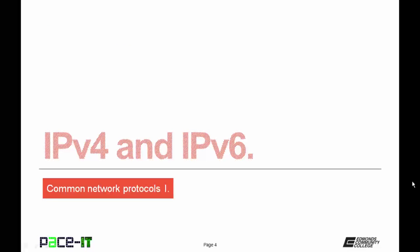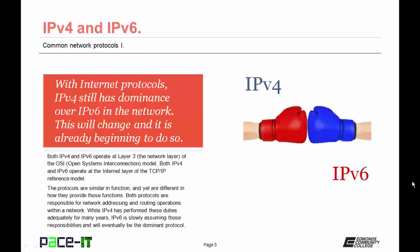I'm going to begin by talking about IPv4 and IPv6. With internet protocols, IPv4 still has dominance over IPv6 in the network — this will change, and it is already beginning to do so. Both IPv4 and IPv6 operate at layer 3, the network layer, of the OSI model, and at the internet layer of the TCP/IP reference model. The protocols are similar in function, yet different in how they provide those functions. Both protocols are responsible for network addressing and routing operations within a network or networks.